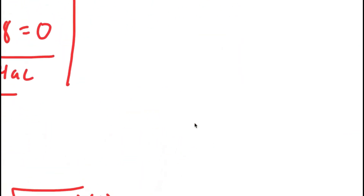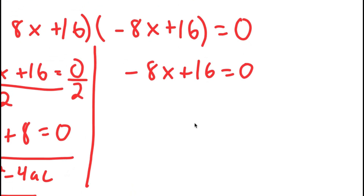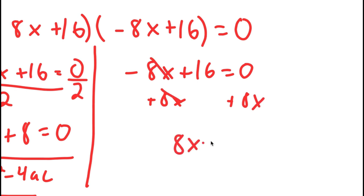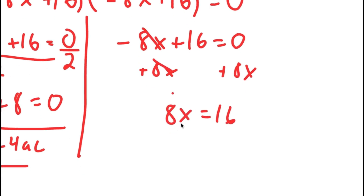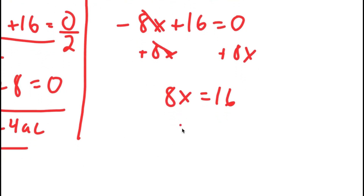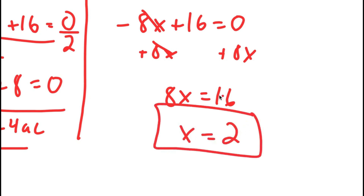For the second equation, negative 8x plus 16 equals 0. Adding 8x on both sides gives 8x equals 16, so x equals 2. Therefore, I have 3 solutions to this equation.